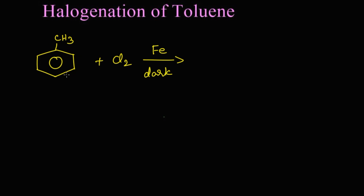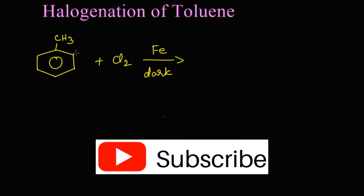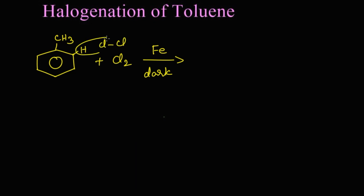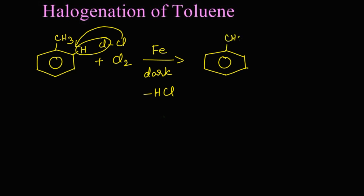Toluene is an ortho and para directing group, so electrophilic substitution takes place. If the reaction takes place at the ortho position, one chlorine from the chlorine molecule and the hydrogen at the ortho position of toluene leave as HCl, and the chlorine replaces the hydrogen. So we get ortho-chlorotoluene.